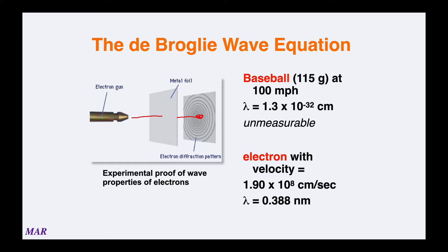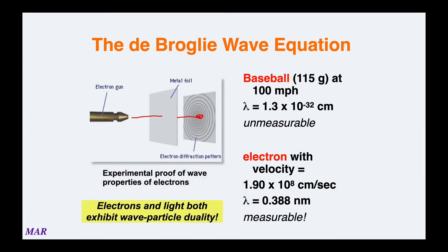If you have an electron traveling at a pretty good clip, 1.90 × 10⁸, getting close to speed of light, that wavelength comes out to be 0.388 nanometers, and those are wavelengths you can measure.